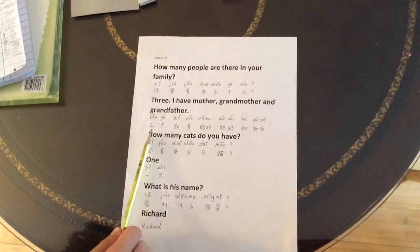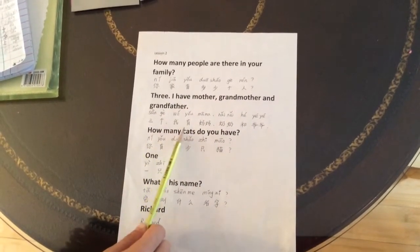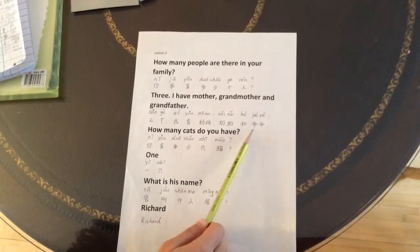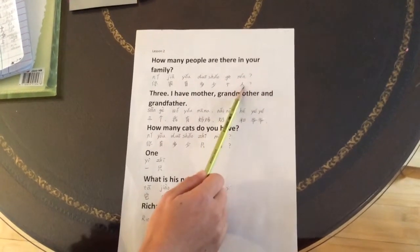你家有多少个人? 三个. 我有妈妈, 奶奶和爷爷. See, 人 uses 个.